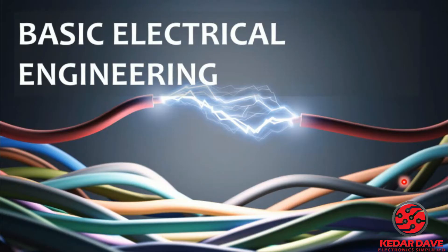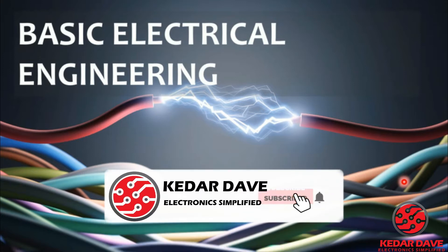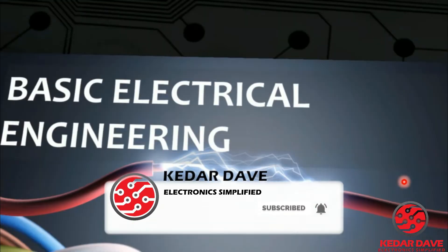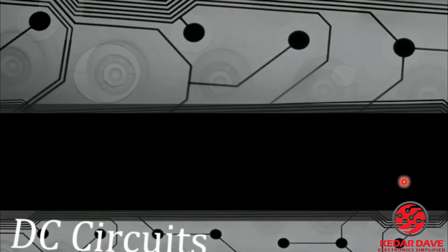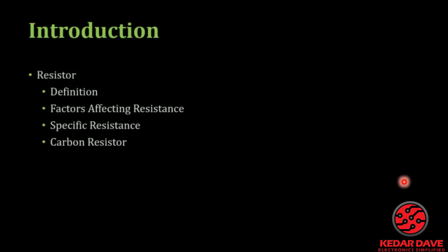Welcome friends, welcome to the lecture series of Basic Electrical Engineering. In today's lecture we are going to learn about resistors. The chapter is on circuits and we are going to learn the basic definition of the resistor, factors affecting the resistance, specific resistance, and the carbon resistor.